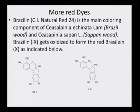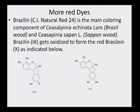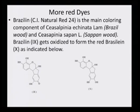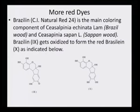More red dyes come from the braziline variety, with CI number Natural Red 24, the main coloring component from Caesalpinia echinata (brazilwood) and Caesalpinia sapan (sapanwood). These two have very similar structures. Braziline as a carbonyl compound does not have very good color, but when it is in the enolic form brazilein, it is a brightly red colored dye.